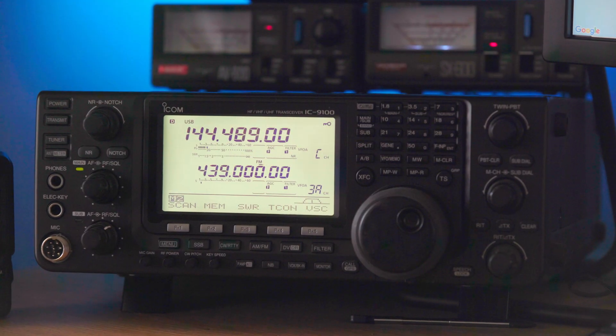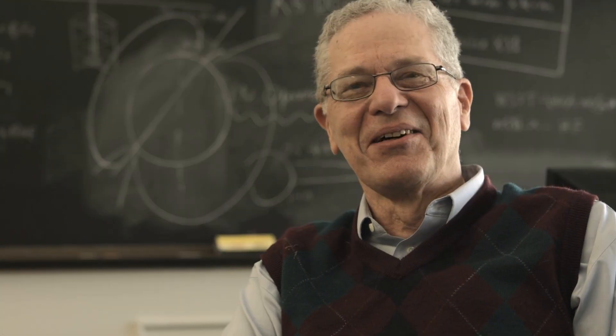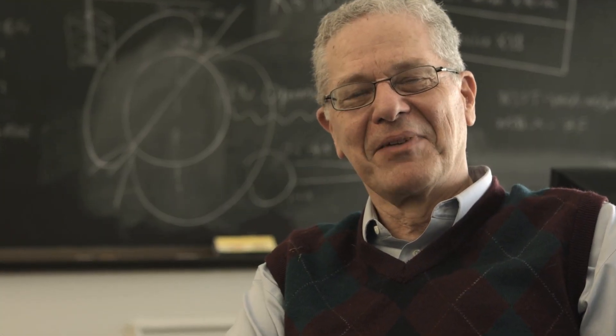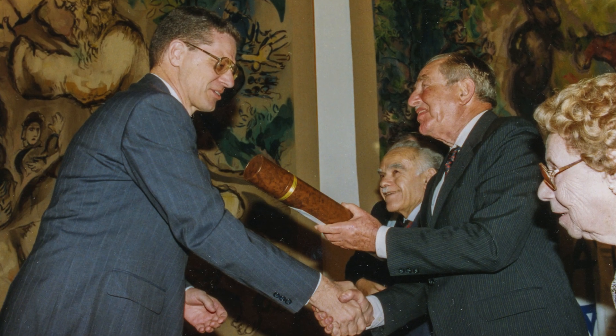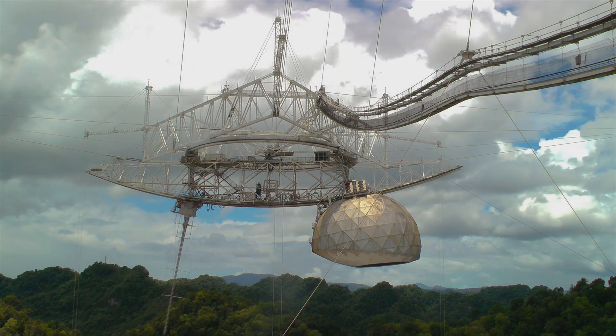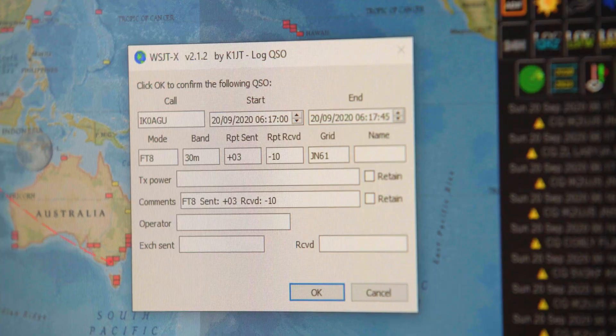WSPR first appeared in November 2010. It was developed by emeritus professor Joe Taylor, an American astrophysicist based at Princeton. Joe first obtained his amateur radio license as a teenager in 1954, which led him to the field of radio astronomy. His call sign is K1JT.